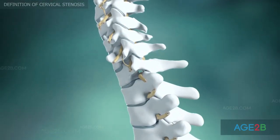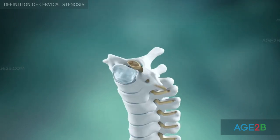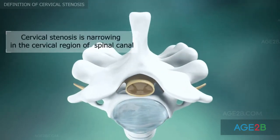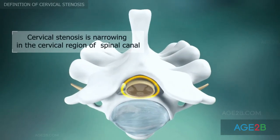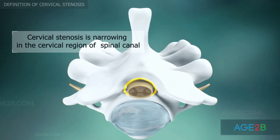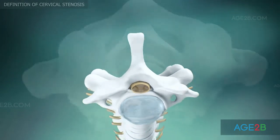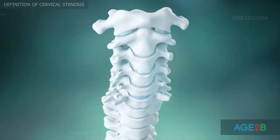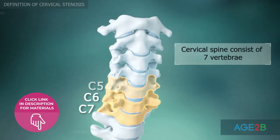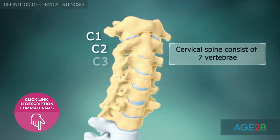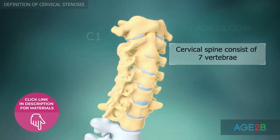Cervical stenosis is a condition that occurs when the spaces in your backbone become narrow. The cervical region of the spine contains seven vertebrae which are separated by intervertebral discs.